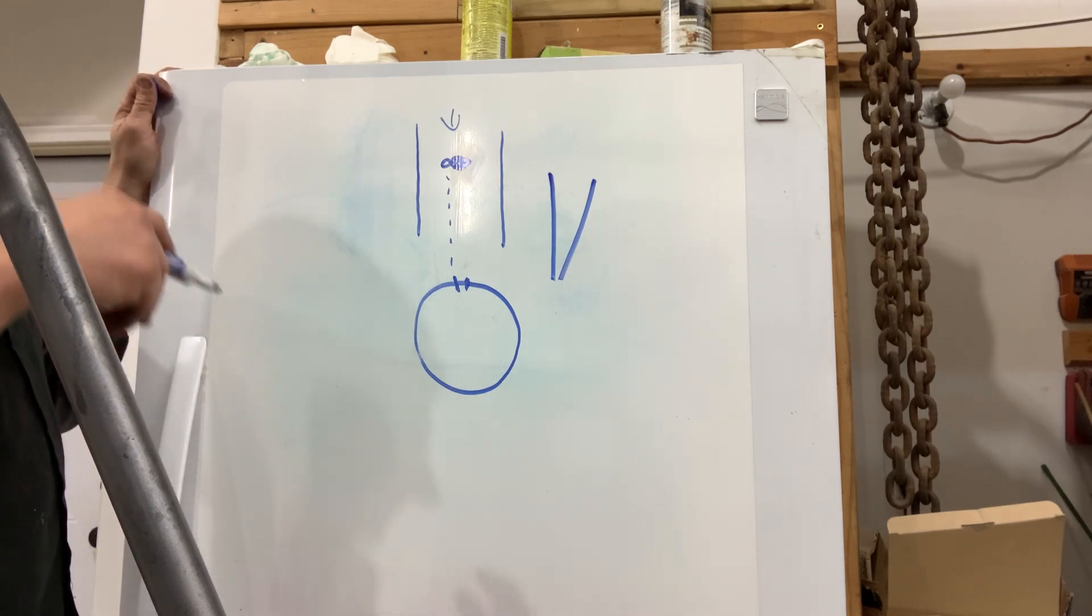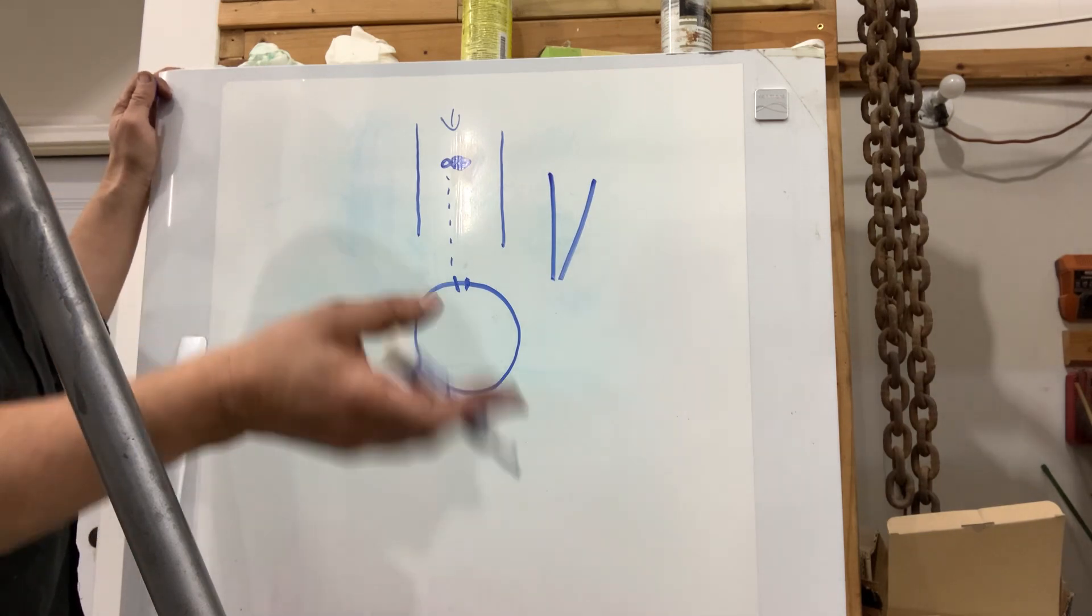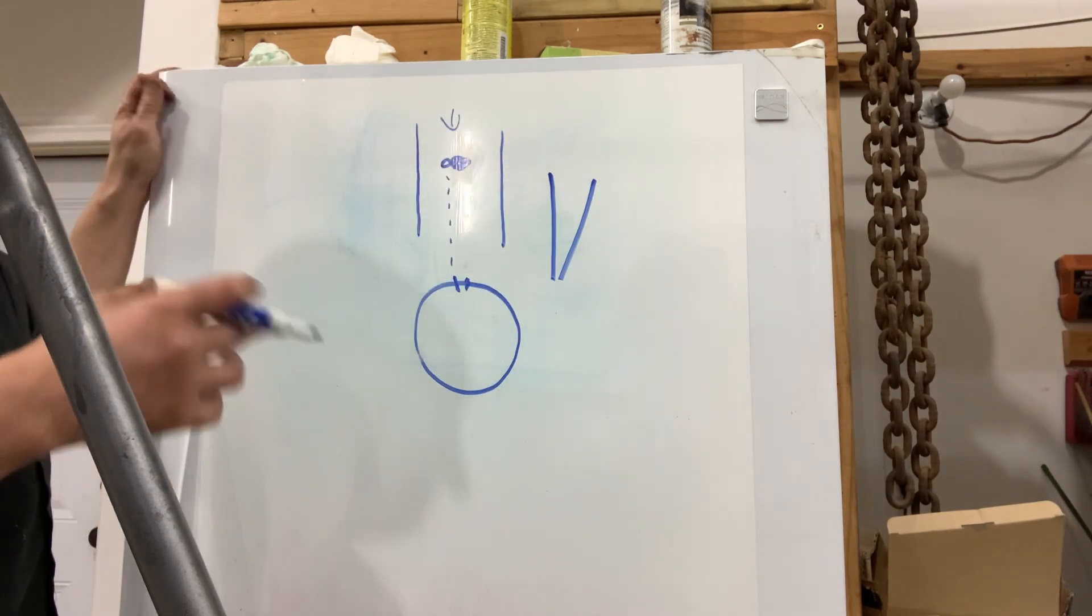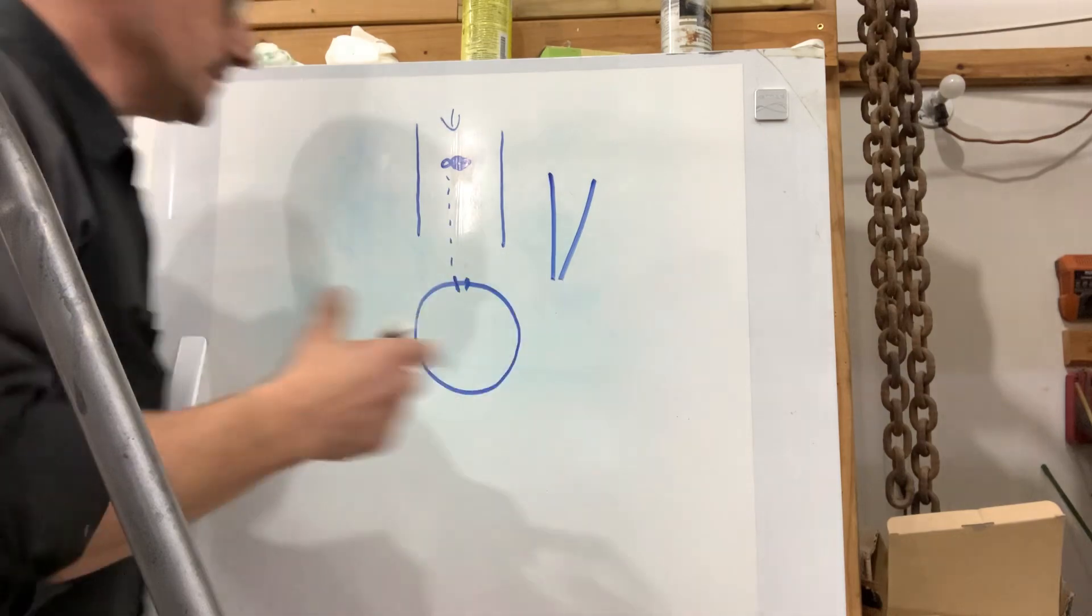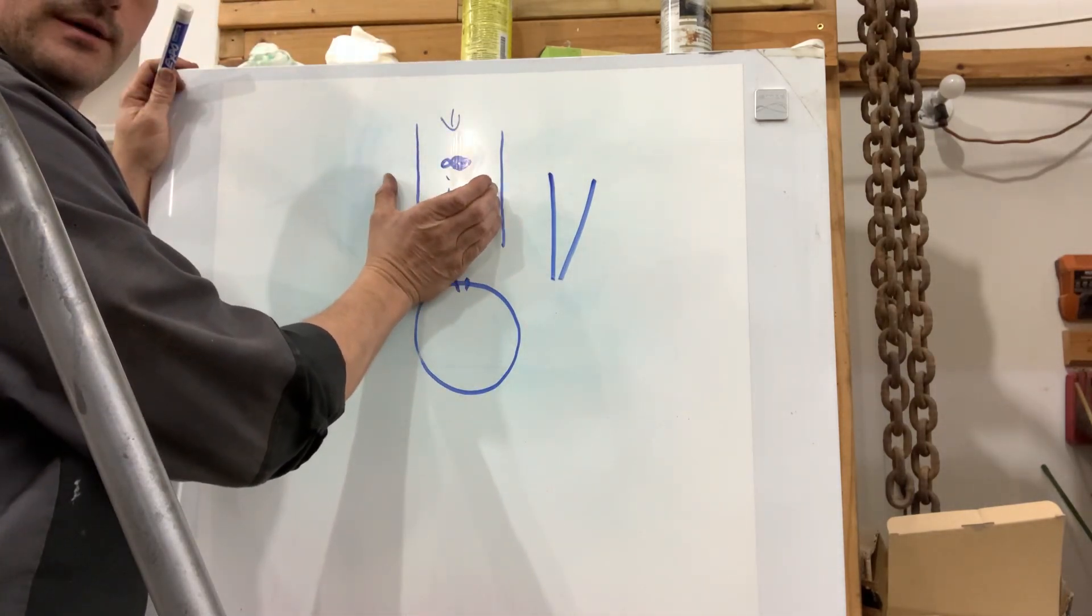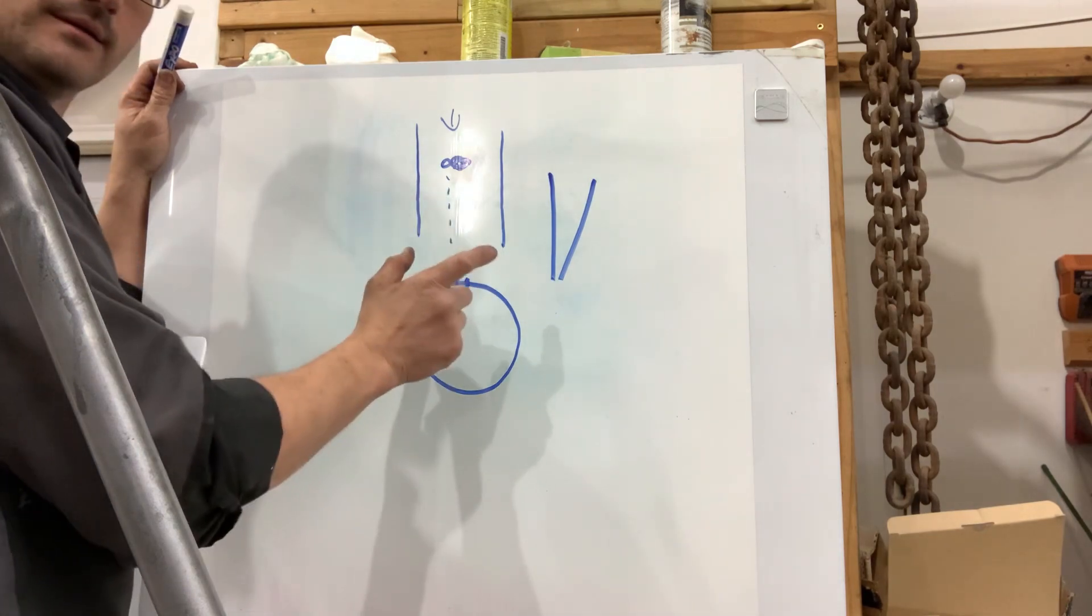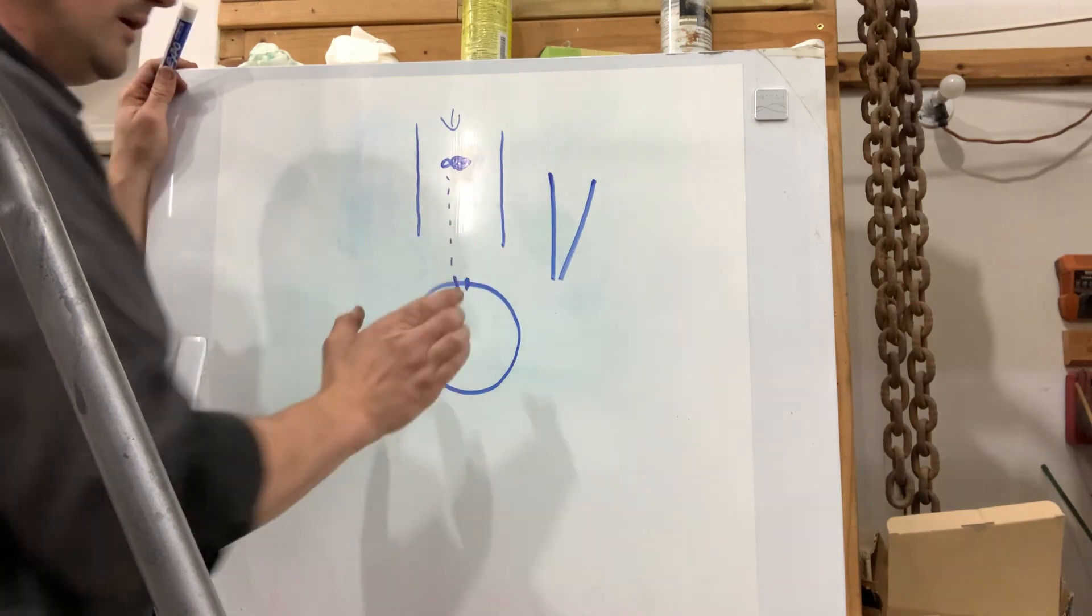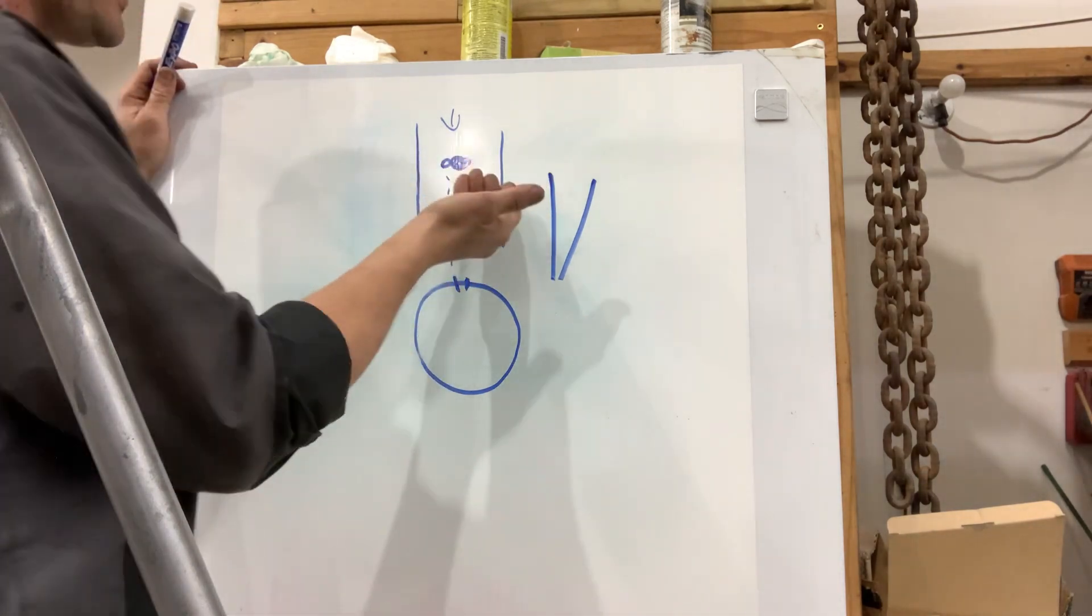Now, ATVs, jet skis, motorcycles, those import engines, they've all tried offsetting the cylinder. It does the same thing. When you offset the cylinder, what are they trying to do? Why didn't they just move the pin?